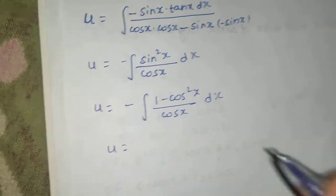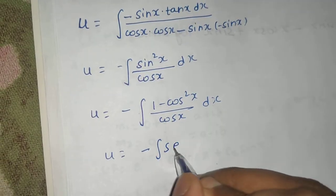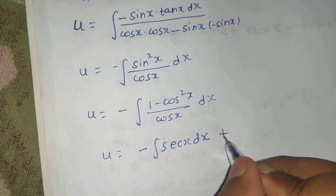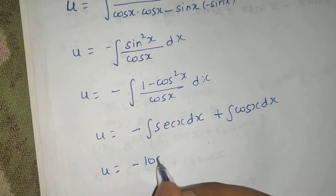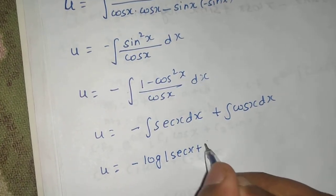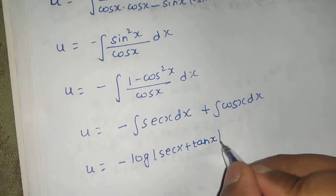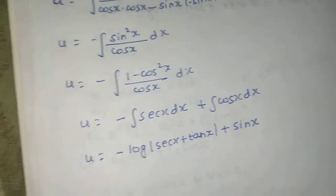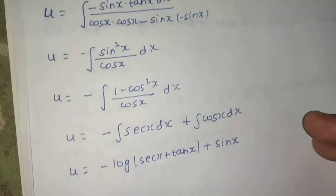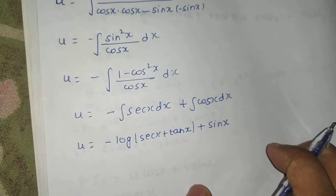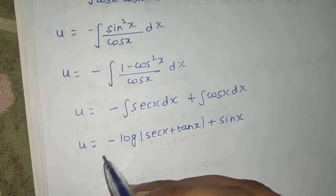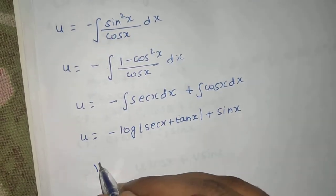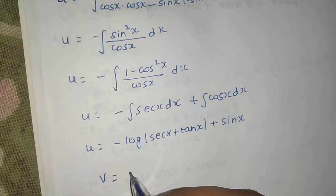So integrating, u = −log|sec x + tan x| + sin x. The integration constants will be managed in the final step. Now coming to v, which is the integral of y1·X over the Wronskian. y1 is cos x.